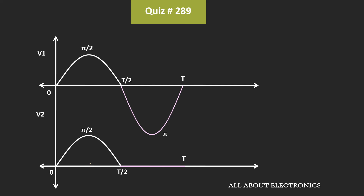For these two waveforms, let's now find the average value. If you see the waveform for V2, then it is similar to the half wave rectifier waveform. For the half wave rectifier, the average value can be given as Vm divided by π, where Vm is the peak value.